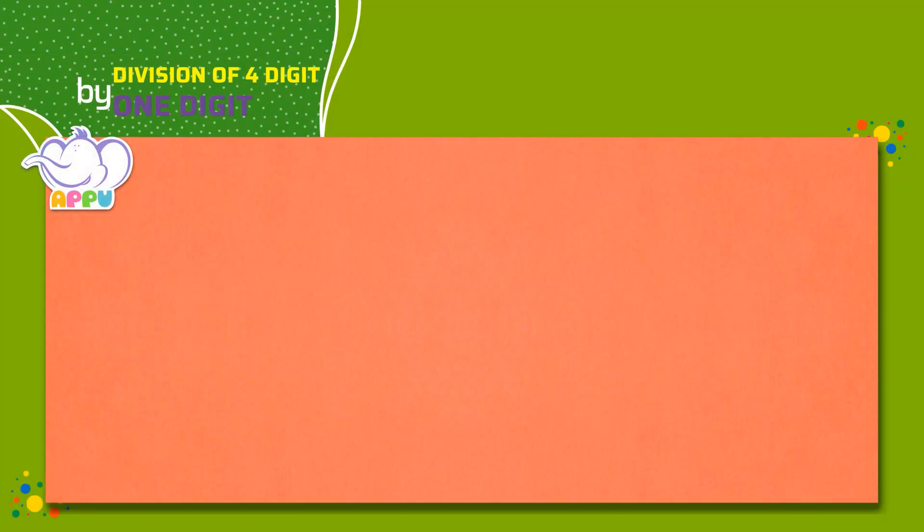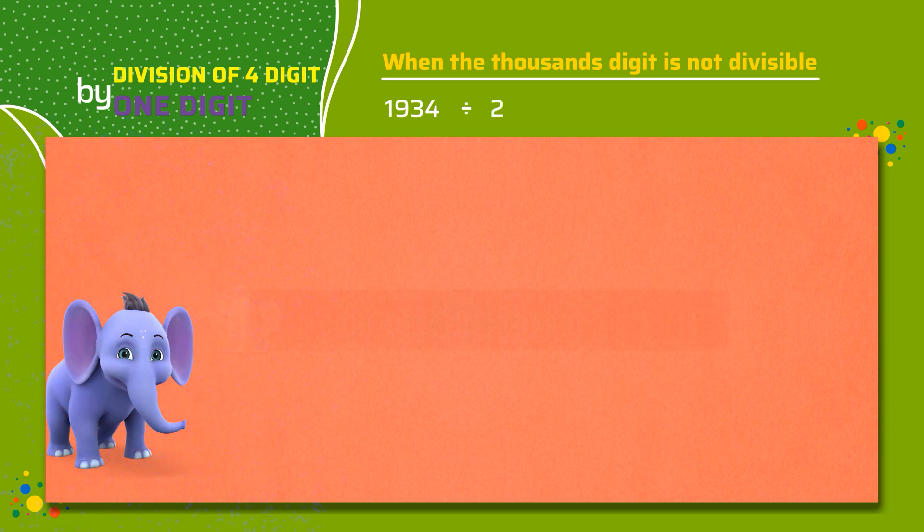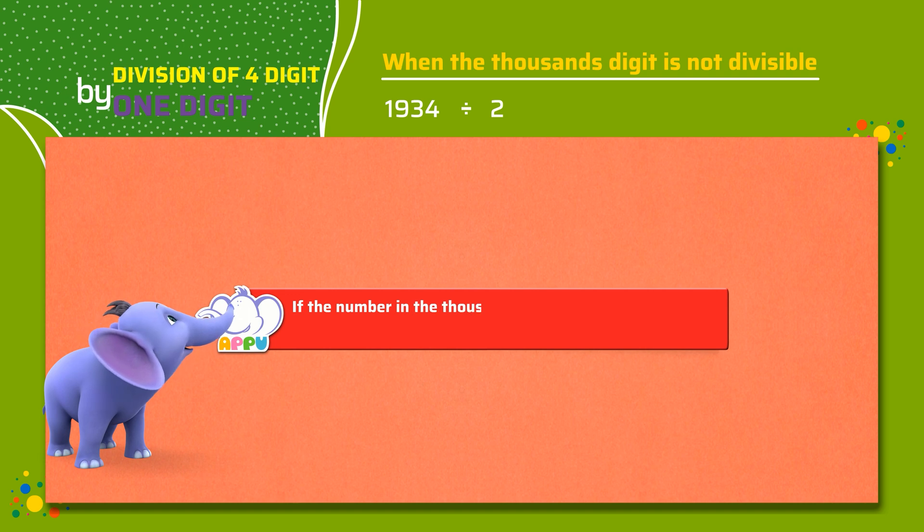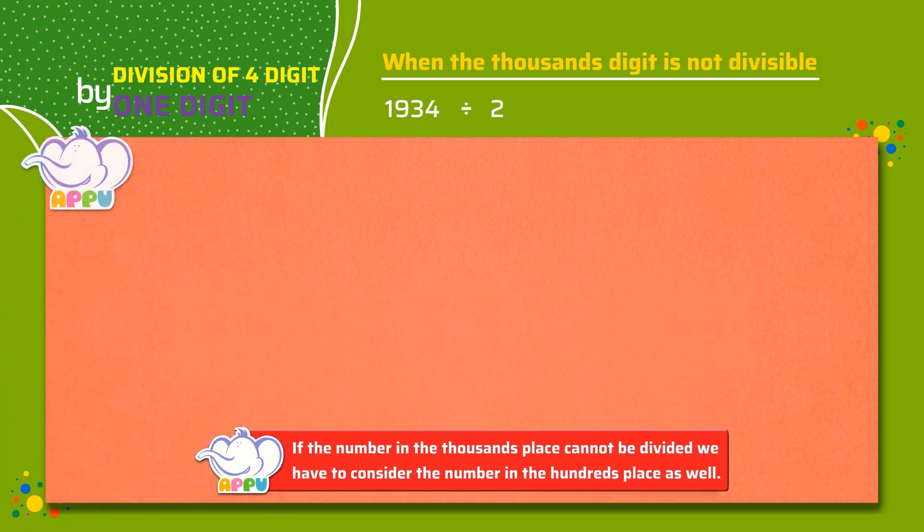Divide four digits by one digit. One thousand nine hundred thirty-four by two. If the number in the thousands place cannot be divided, we have to consider the number in the hundreds place as well. We write the division bracket and write two outside the bracket and one thousand nine hundred thirty-four inside the bracket.